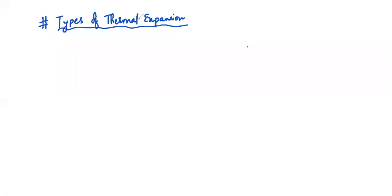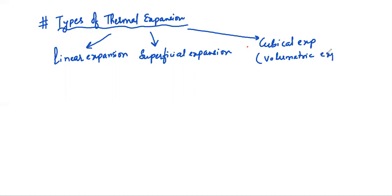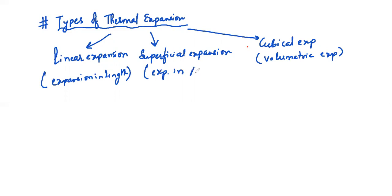We are now going to discuss types of thermal expansion. There are three types: linear expansion, superficial expansion, and cubical expansion, which we can also call volumetric expansion. In linear expansion, there is expansion in length. In superficial expansion, there is expansion in area. And in volumetric expansion, there is expansion in volume.